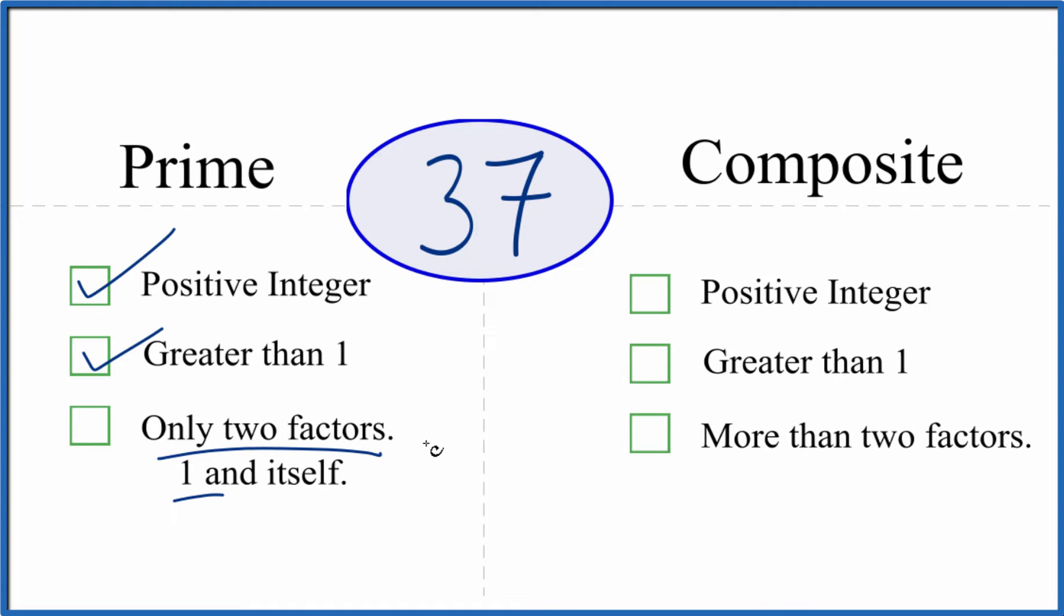So we know that 1 times 37 gives us 37. That's two factors. But are there any more? Any other numbers that go evenly into 37? Turns out there aren't any more, just 1 and 37. So there are only two factors.